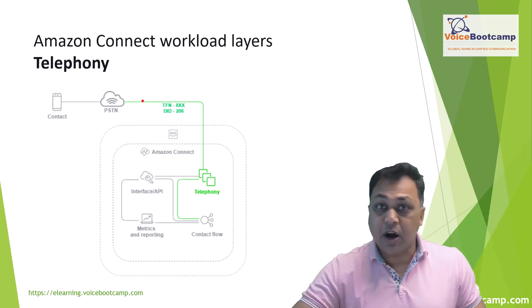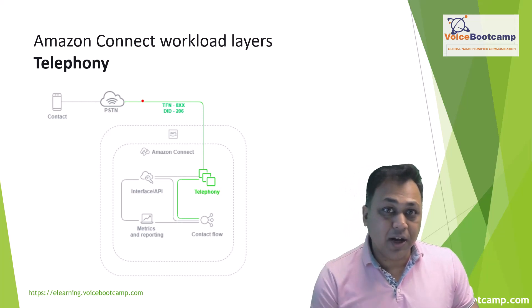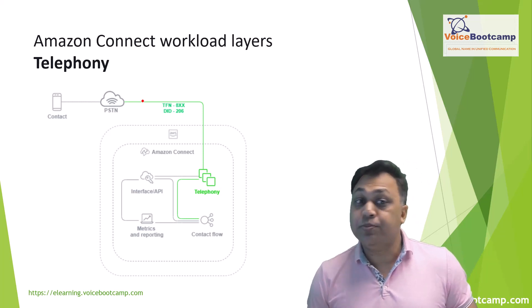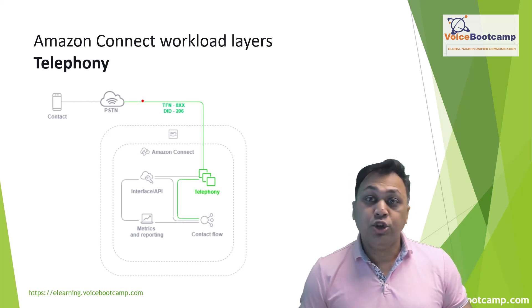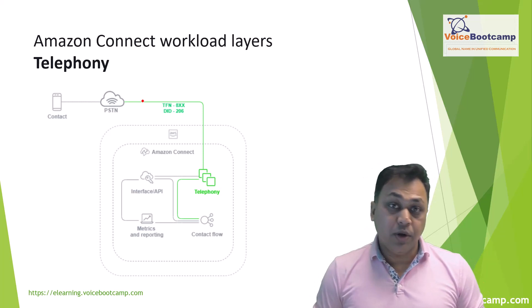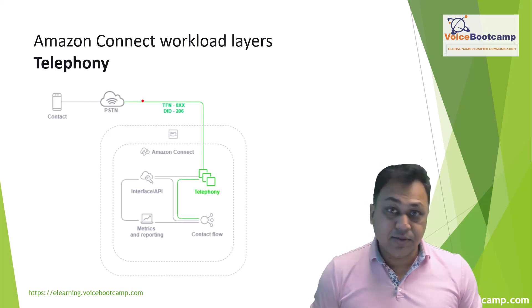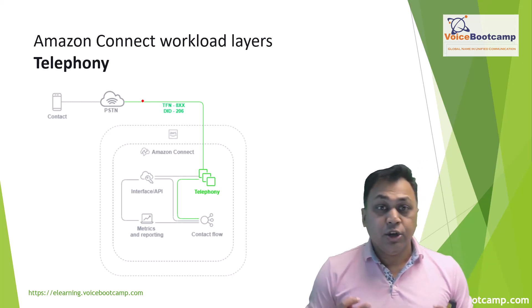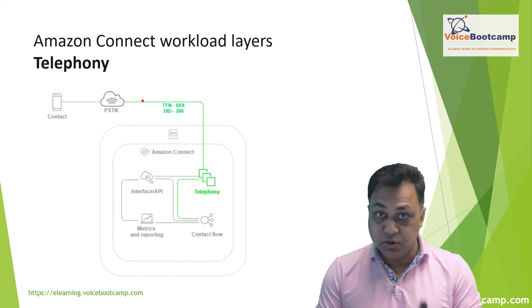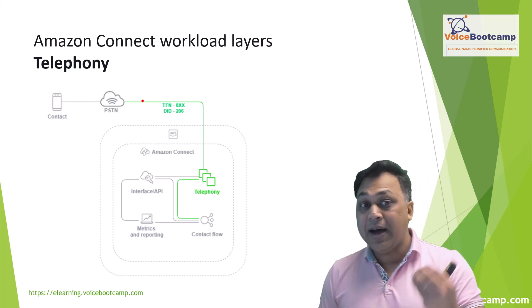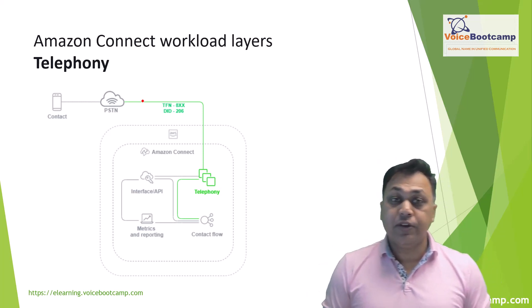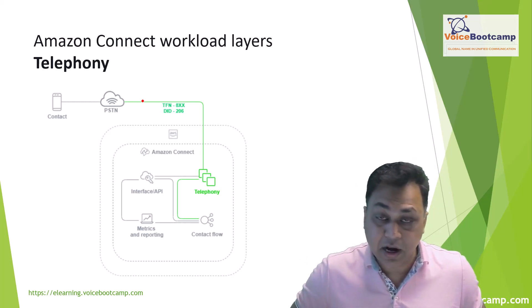When a voice call is placed to your Amazon Connect telephone number, the telephony layer controls the endpoint that your customer calls through their carrier across the PSTN into your Amazon Connect instance. Keep in mind you are not the only customer — thousands of other customers globally use Amazon Connect. The AWS team must ensure that any call coming into your phone number is routed through the right telephony layer and carrier into the correct instance.